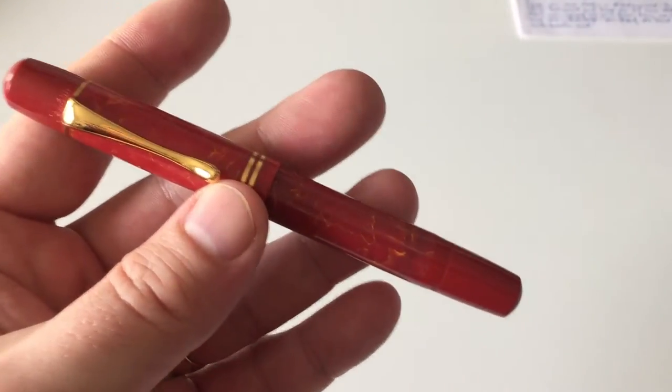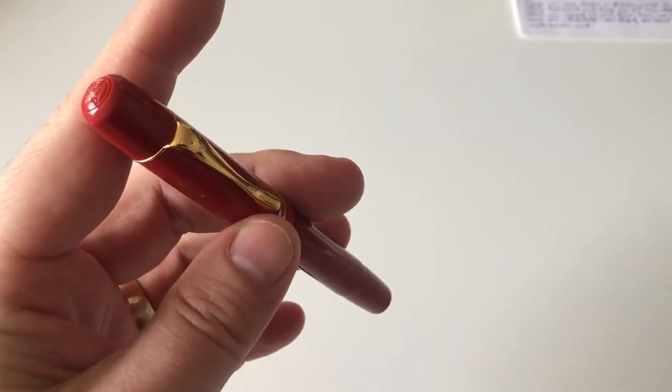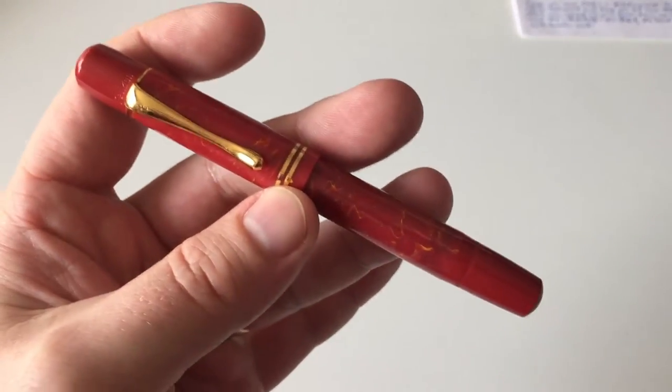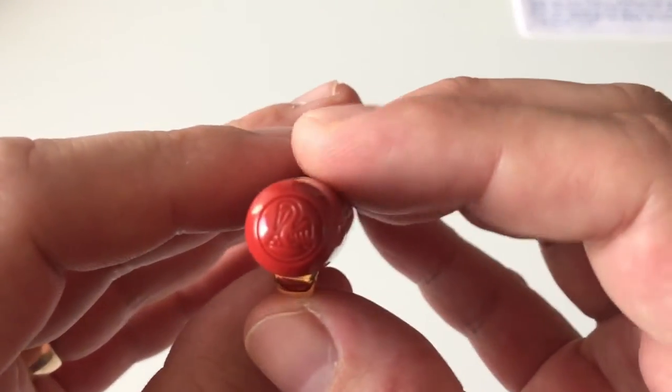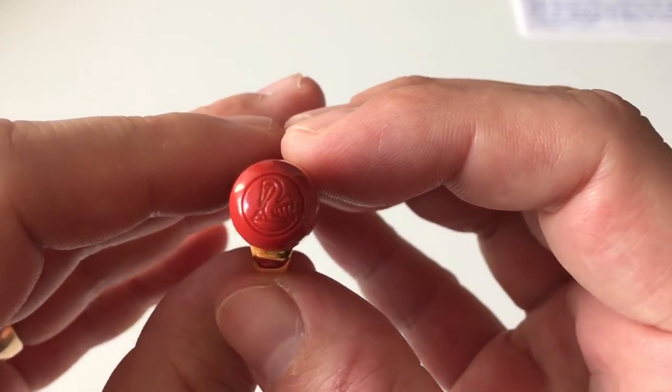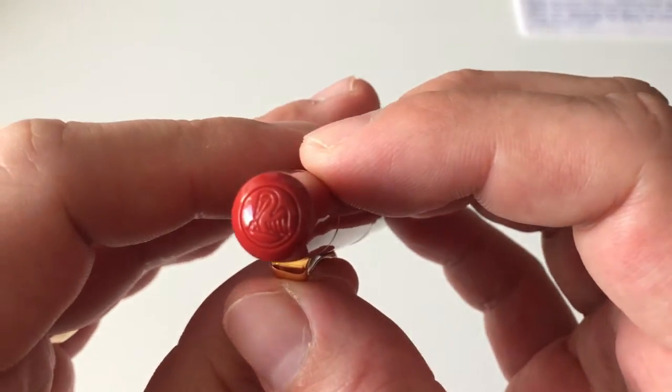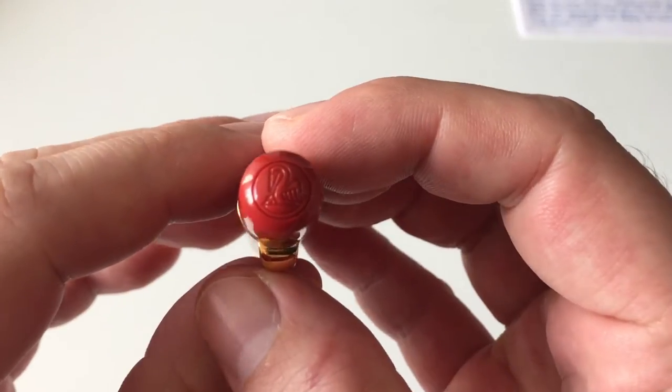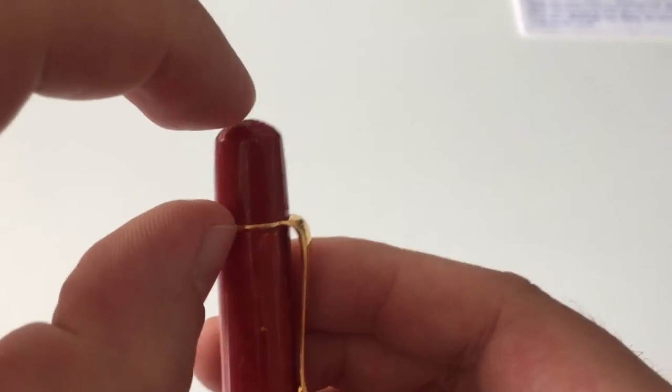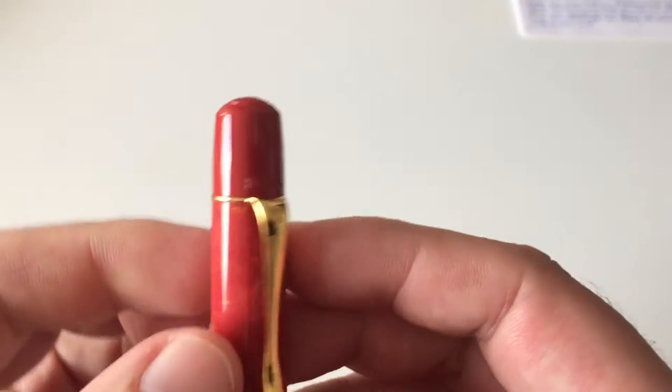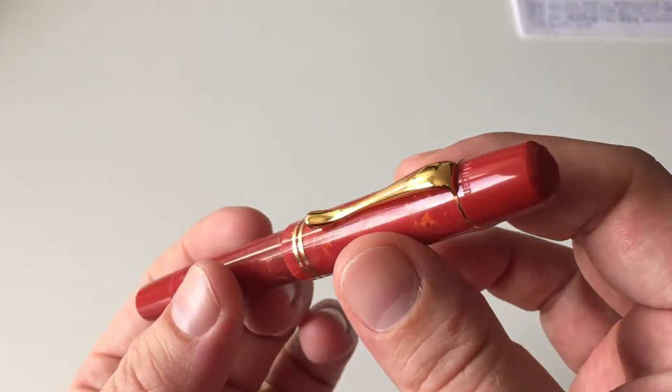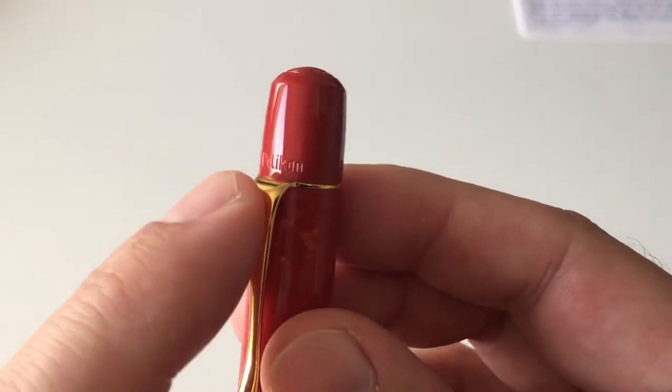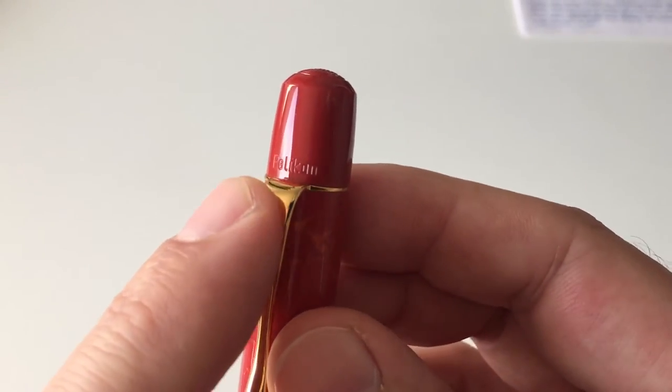I have the medium here, and the pen comes in sizes extra fine all the way through broad, which is the standard nib sizes. On top of the cap we have a Pelikan logo—looks like the old school Pelikan logo that was on the 101 pens. It's a rather large top of the cap here.